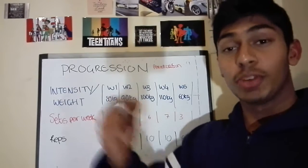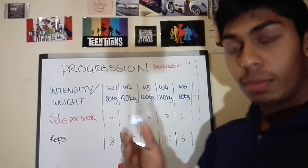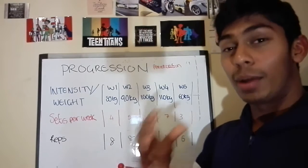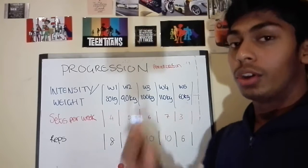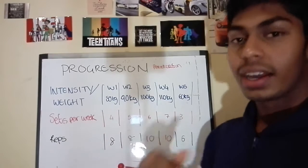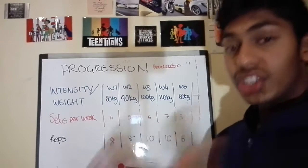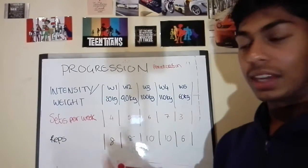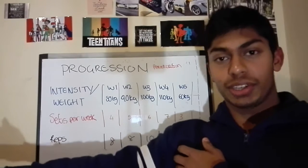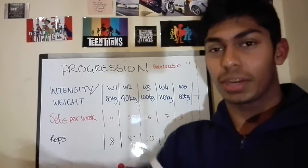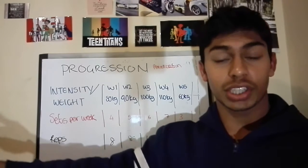Let's go into sets per week — the total number of sets per body part per week. You want to start looking at MEV and MRV. MEV is the minimum effective volume you need to do to start growing — the minimum amount of work to actually grow the muscle. MRV is the maximum recoverable volume: if you hit that volume, you're just going to be able to recover. When hitting MRV, you want the body to adapt to something very challenging. It's like a slingshot — pull it back just before it breaks, then let it go and shoot forward.